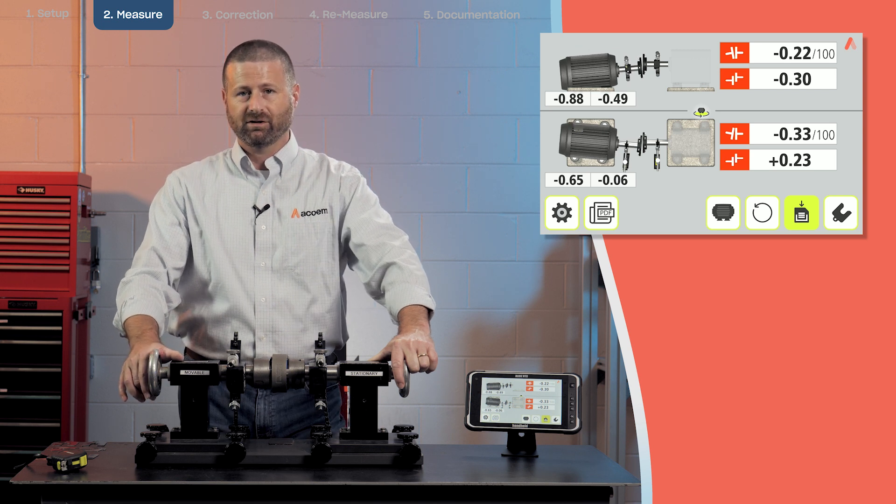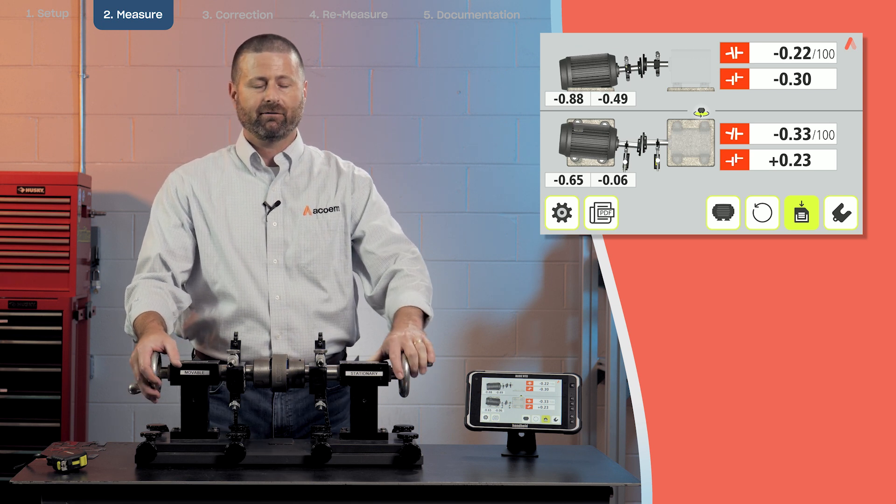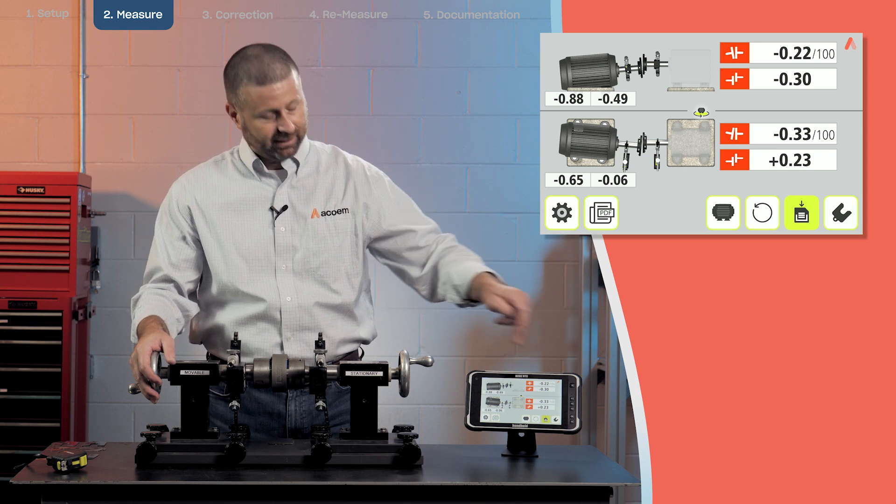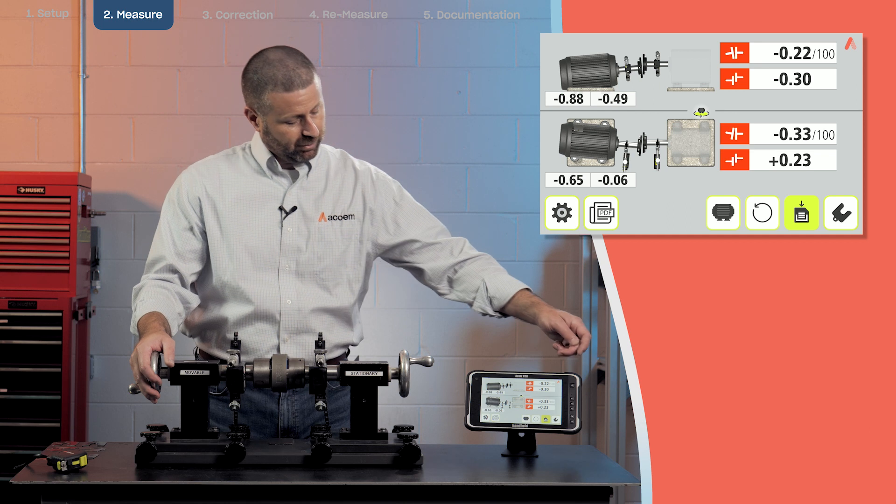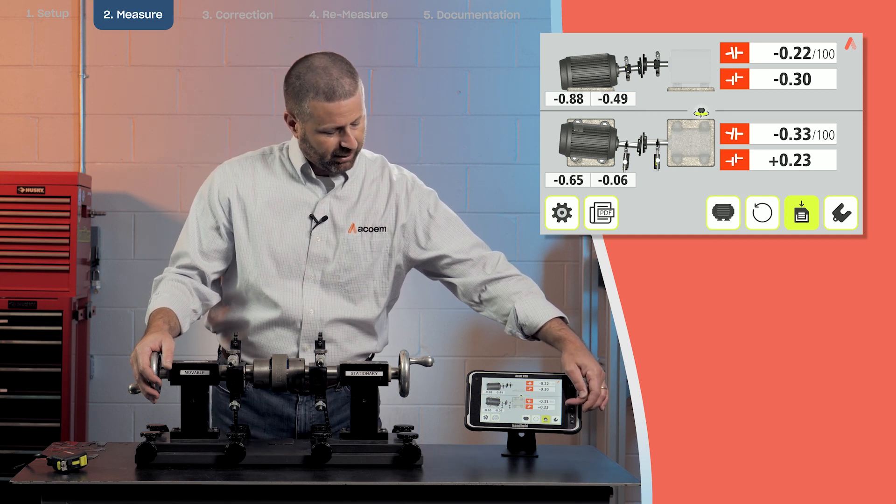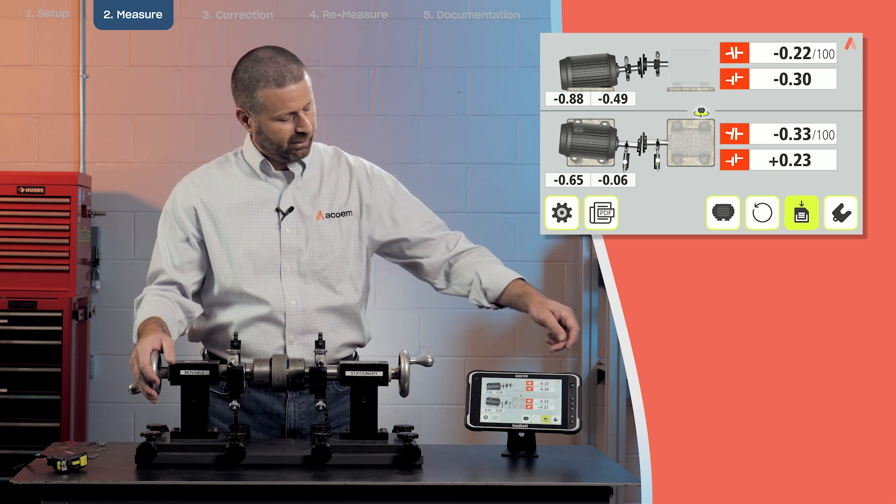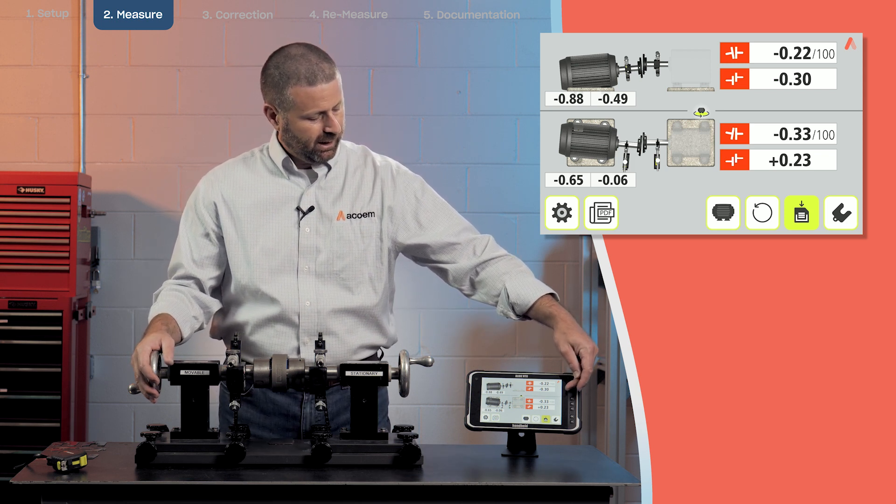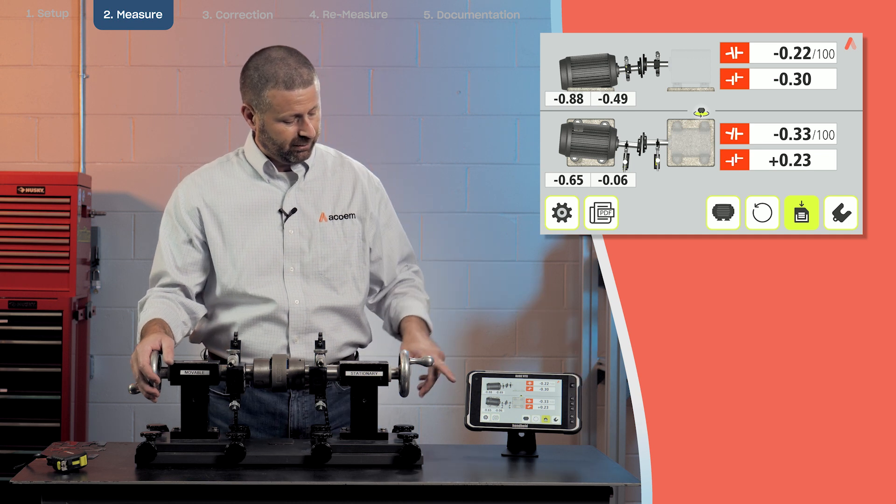Once the measurements are complete, we have the presentation of data. What you have here is the vertical at the top and the horizontal at the bottom. Vertical angle and offset, horizontal angle and offset. The angles are expressed in terms of millimeters per 100 and the offsets are expressed in millimeters.